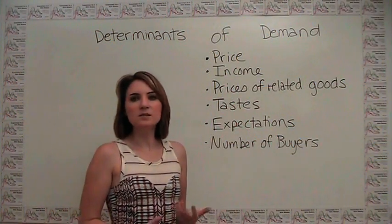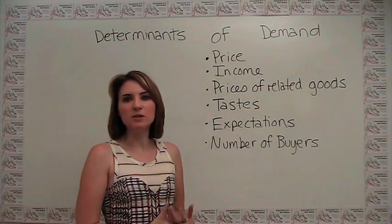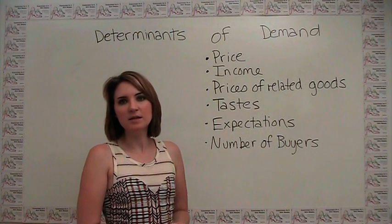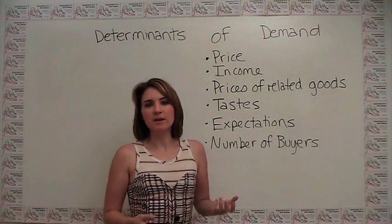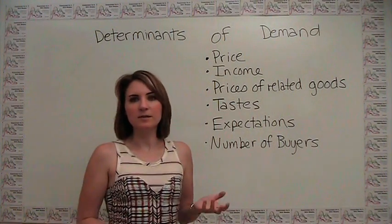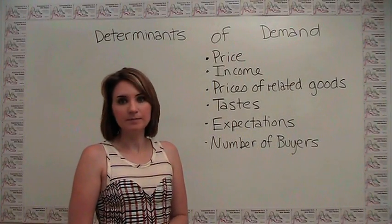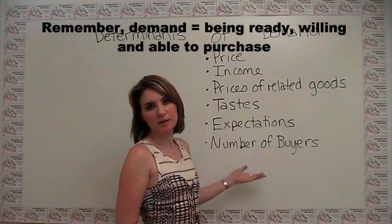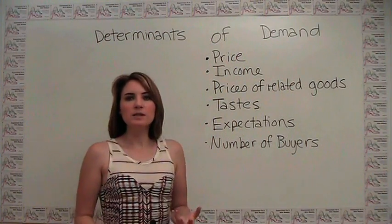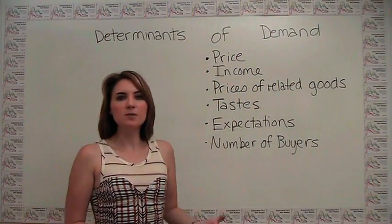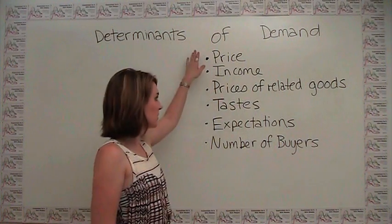Last time we talked about the demand curve and price as a fundamental determinant of demand. Now let's think about all the other things that could affect the amount that a consumer demands for a particular item. The different categories of the determinants of demand are: price,